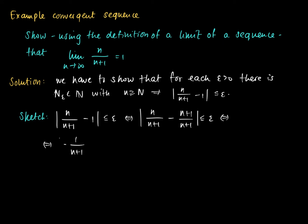So we get the absolute value of minus 1 over n plus 1 should be smaller or equal than epsilon. But we know that 1 over n plus 1 is positive with a minus sign, so we can leave out the absolute values and just write 1 over n plus 1 should be smaller or equal than epsilon.